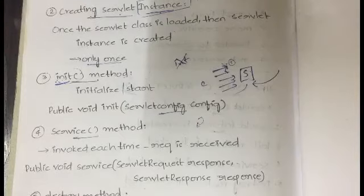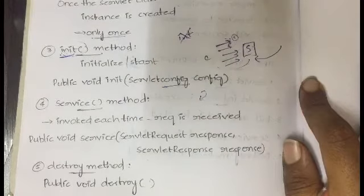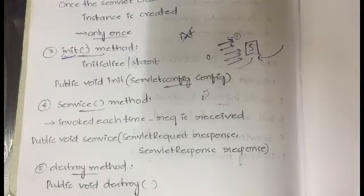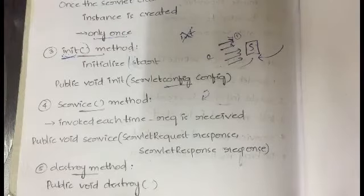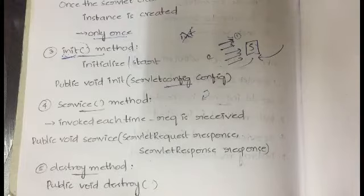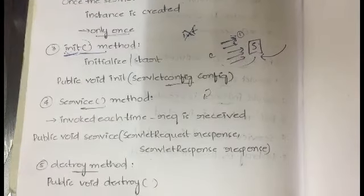The last step is the destroy method. Before removing the servlet instance — once the work related to the server is done — the destroy method is called. It gives the servlet a chance to release any resources, files, or threads that are running, allowing the servlet to clean up. Once the destroy method is called, the servlet is ended.